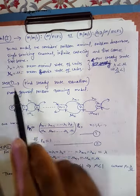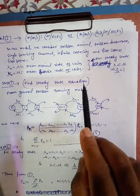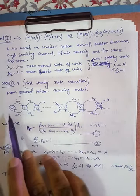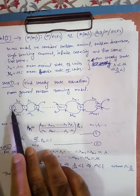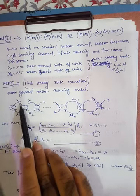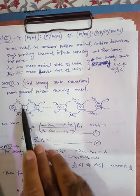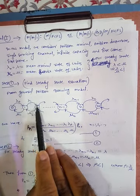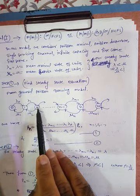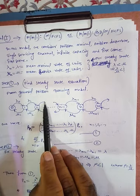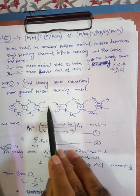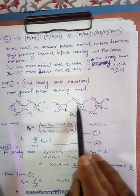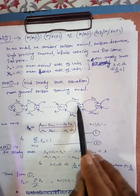Step number 1: find the steady state equations. For this we will use a state transition chart. Initially we have 0 customers. Then one arrival occurs at rate λ₀, so we have 1 customer. Again a customer arrives at rate λ₁, giving 2 customers. Another arrives at rate λ₂, giving 3 customers, and so on up to the nth state with n number of customers.